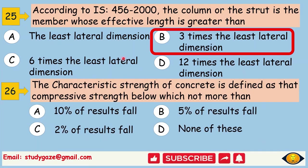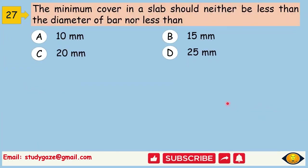The characteristic strength of concrete is defined as that compressive strength below which not more than. Answer is 5% of results fall. The minimum cover in slab should neither be less than the diameter of bar nor less than. Answer is 15 mm.